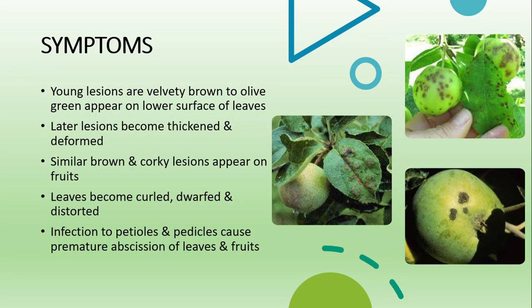Symptoms: young lesions are velvety brown to olive green and these appear on the lower surface of the leaves. Later these lesions become thickened and deformed, or similar brown and corky lesions also appear on the fruits as well.